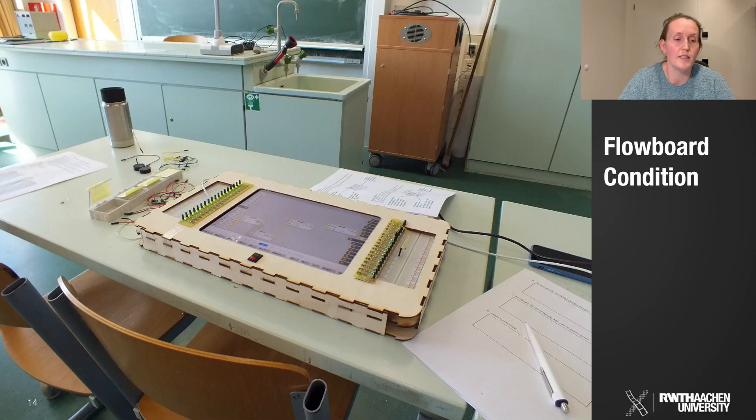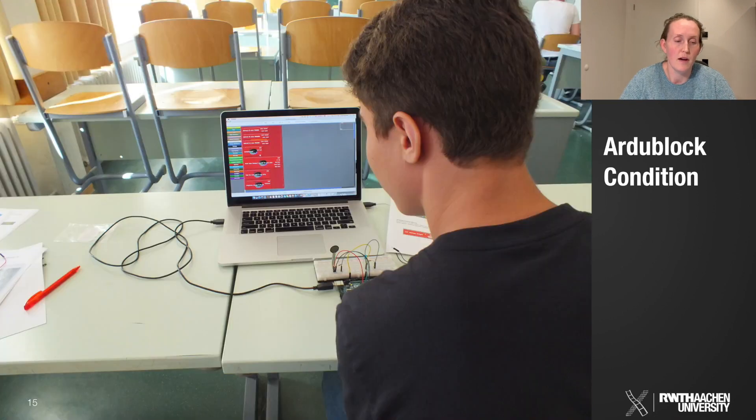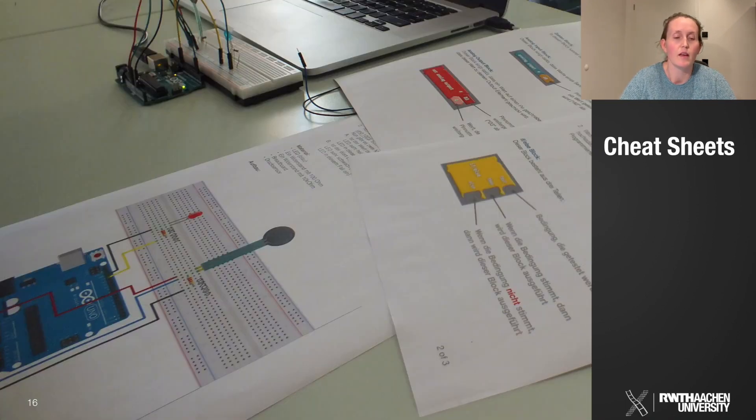Now on this slide, you can see the setup in our Flowboard condition. The Flowboard is in the middle and it's surrounded by the electronic components. In our Artoblock condition, the laptop was running the Artoblock IDE. One important thing were the cheat sheets that we provided in both conditions. They included descriptions of the nodes and blocks that the participants needed to program the tasks. We also gave them schematics of the electronic circuits, because our study wanted to focus on the impact of Flowboard on programming the electronics and not the electronic circuit building.